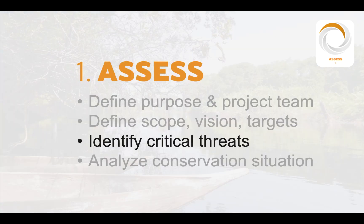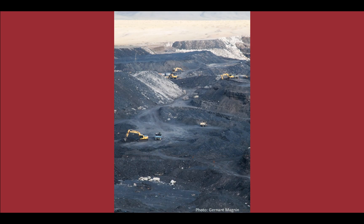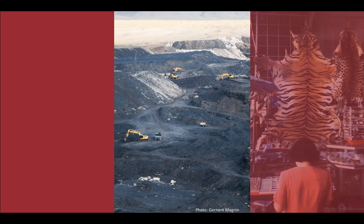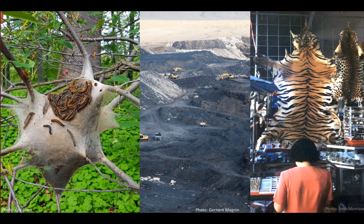Next, we identify the critical threats that are directly impacting the health and viability of our conservation targets. Direct threats are primarily human activities that immediately degrade a conservation target. In these next images, we'll depict some examples of common direct threats, such as energy production and mining, unsustainable hunting, and introduction of exotic and invasive species.